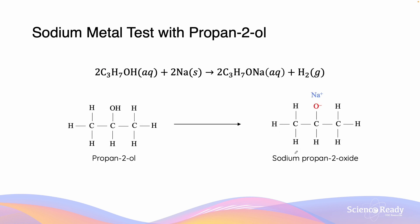Here's the example of the sodium metal test with propan-2-ol. We can see that the reaction with the ROH group, where R is C₃H₇, leads to the formation of a C₃H₇ONa alkoxide salt. Furthermore, we also have the formation of hydrogen gas, which is a distinctive characteristic of this reaction.